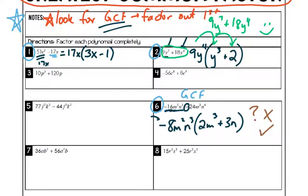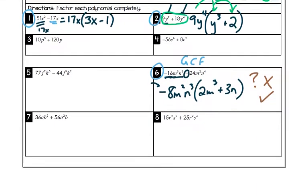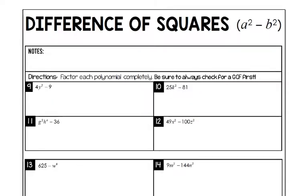So the first step is always, always, always: look for a GCF. Now if you flip to the next flap, it's a really important one called a difference of squares. It's exactly what it sounds like — it's a difference, meaning you see subtraction between two terms that are both squared terms. That's a difference of squares, sometimes called a difference of two squares.